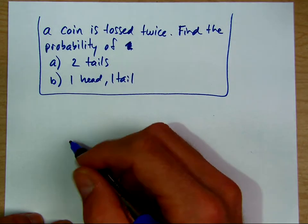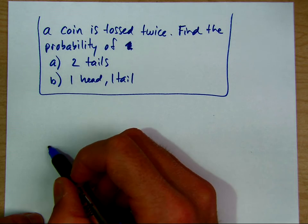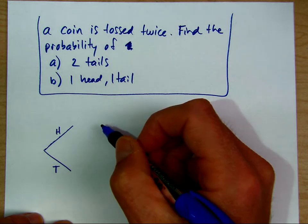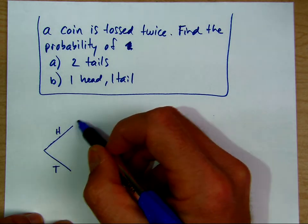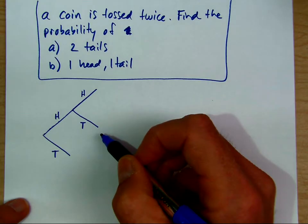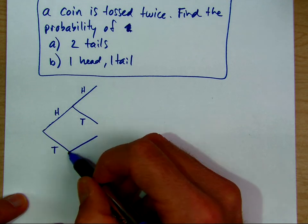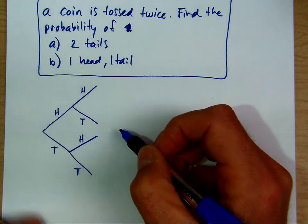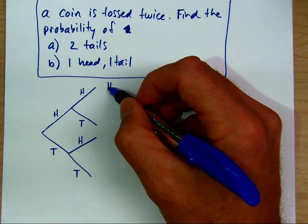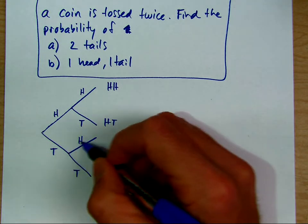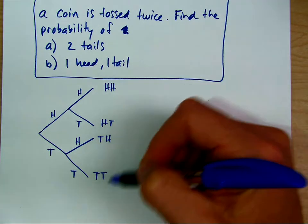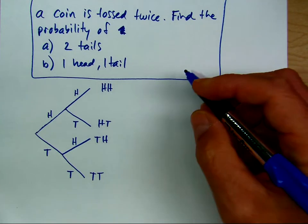We can use a tree or a lattice. When we flip a coin once, it can be heads or tails. If the first flip is heads and we flip again, we could get heads or tails. If the first flip was tails and we flip again, we could again get heads or tails. This tree keeps track of all possibilities in two flips: heads-heads, heads-tails, tails-heads, tails-tails. That is the sample space of two flips.